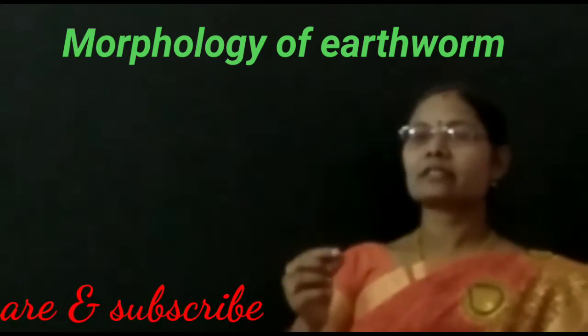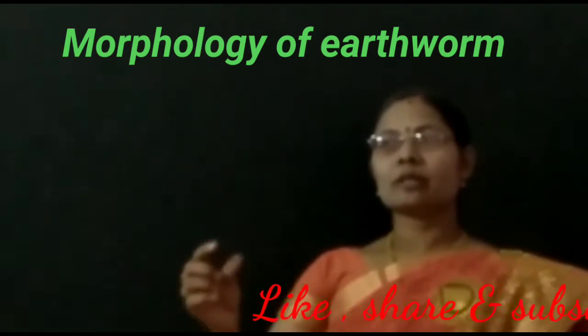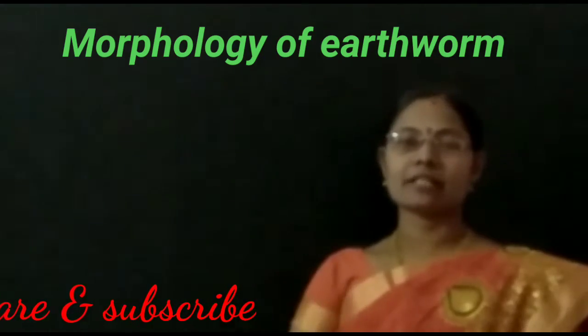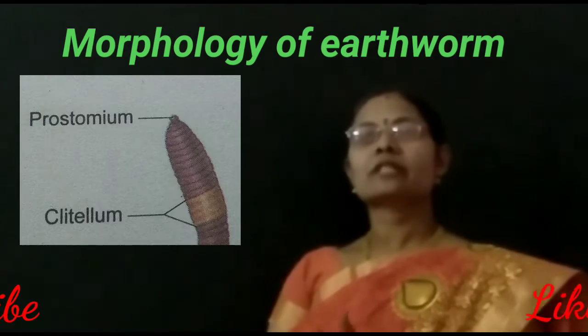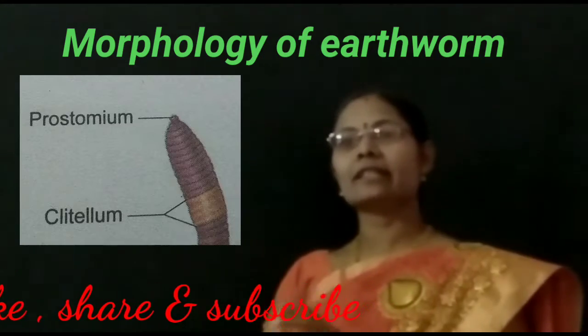The first segment of the earthworm is called the prostomium, which is found as a mouth. The last segment of the earthworm is the anus. Different segments make up the body except the first and last segment. In mature worms, the 14th to 16th segment has a swollen part called the clitellum.